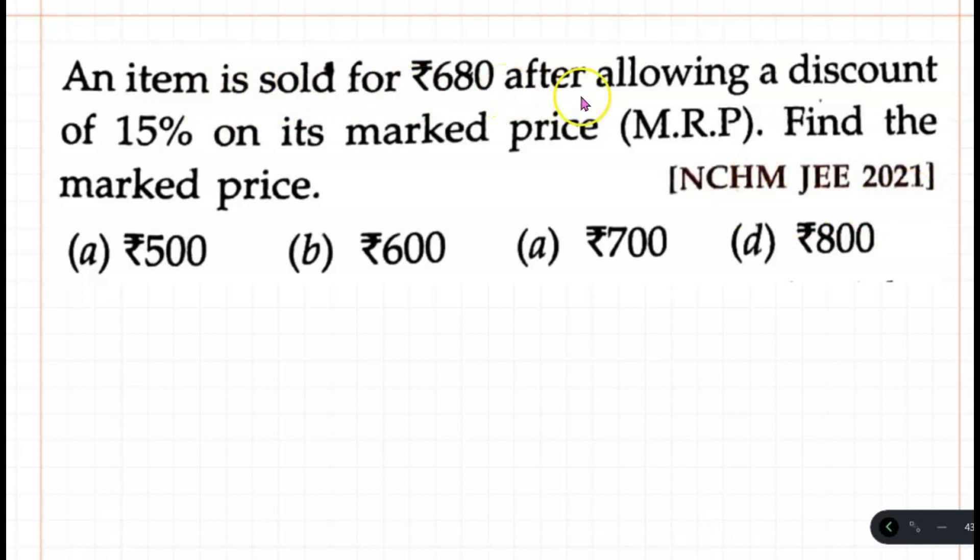An item is sold for Rs 680 after allowing a discount of 15% on its marked price, MRP. Find the marked price.